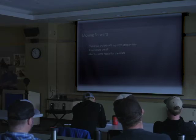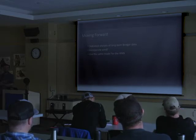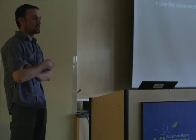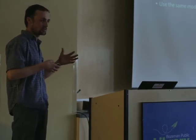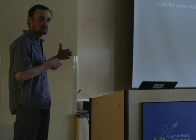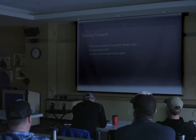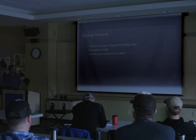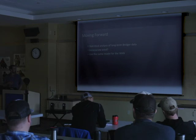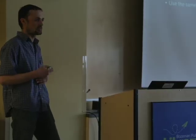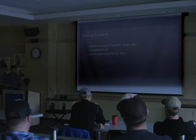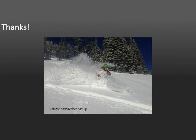Moving forward, I'm going to take a similar approach to look at the full record of the Bridger data and try to quantify whether there's any statistically significant sequence of events immediately prior to a deep slab cycle or in the early season that would form weak layers. I'd like to add wind to the picture to look more at loading events. Then once I get this all worked out, the goal is to use this same approach with the West Wide Avalanche Network and look at other ski areas across the west, comparing different geographical regions and different snow climates. That's all I got. Thank you.